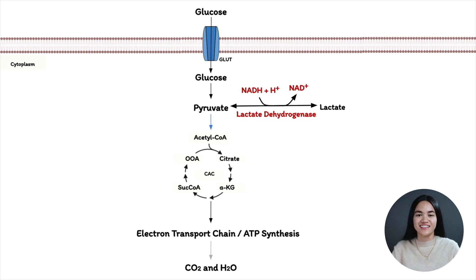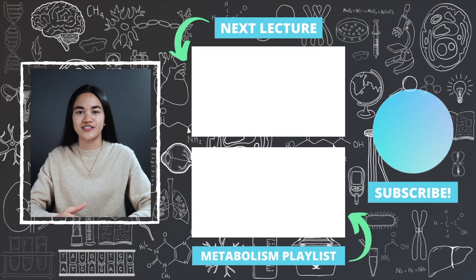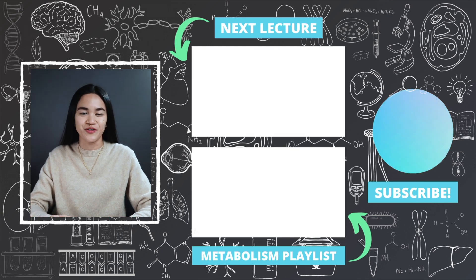That's glycolysis. In this lecture, we learned the importance of glucose and how we use it as fuel. We broke down the 10 enzymatic reactions, how we invest 2 ATP in the preparatory phase and harvest 4 ATP in the payoff phase, giving a total net yield of 2 ATP. We also discussed what happens to the end products of glycolysis and how glycolysis can occur aerobically or anaerobically. Subscribe to EKG science so you don't miss a single lecture — subtract complexity and slow it down.